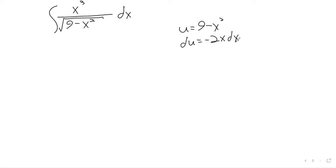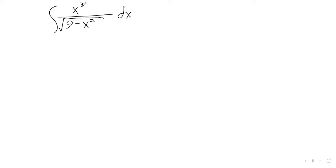Sadly, u-substitution doesn't work. If I erased that and just had an x up there, it would work — we'd put in the negative 2 and spare ourselves a lot of hassle. But we have the problem we have and that's not going to work. And certainly this doesn't look like integration by parts — we have a quotient, not really a product, and it's not just powers of trig functions. It doesn't look like an inverse trig function either.